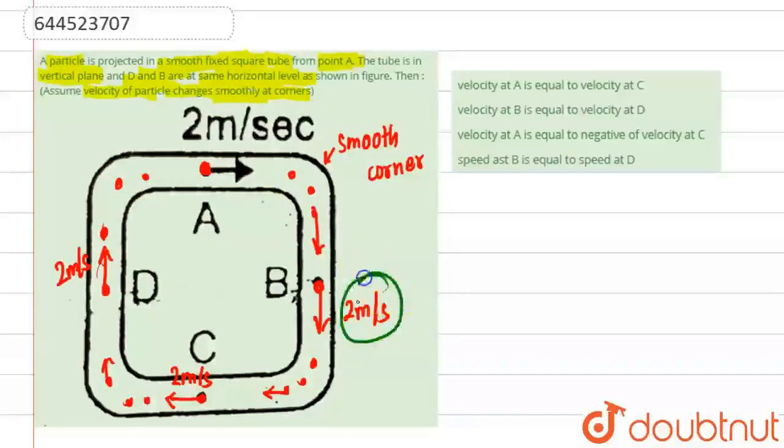So basically the speed remains constant throughout because there are smooth corners. This is given in the question that there are smooth corners, due to this the speed remains constant.